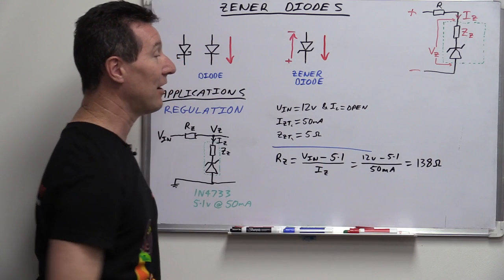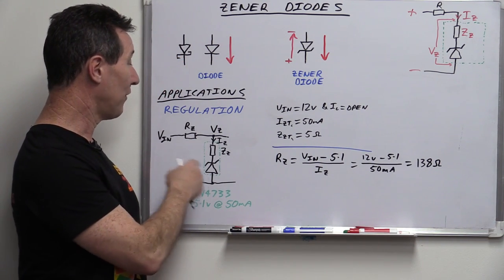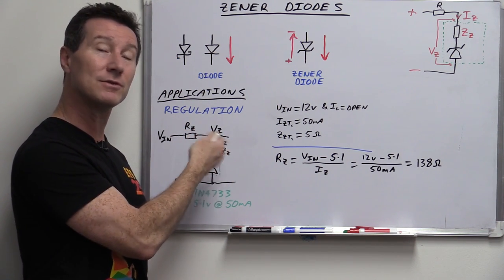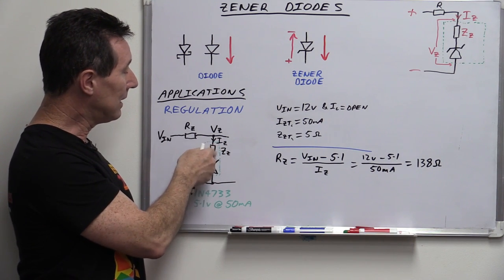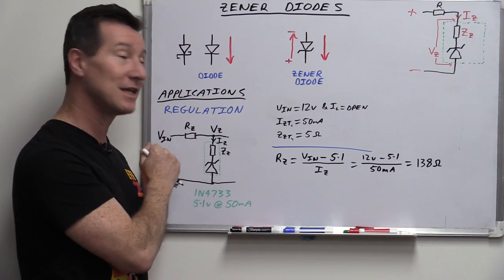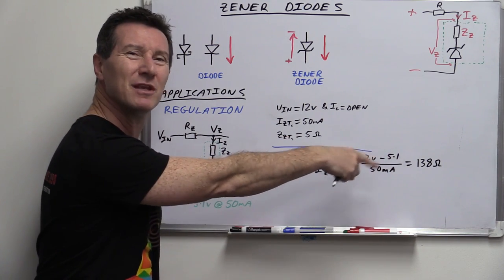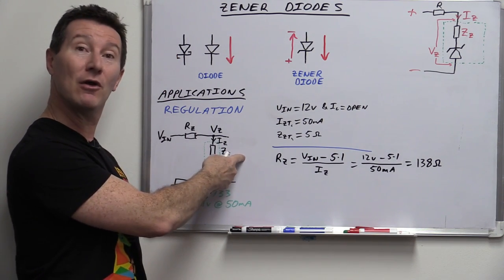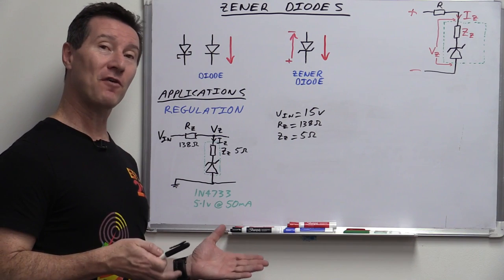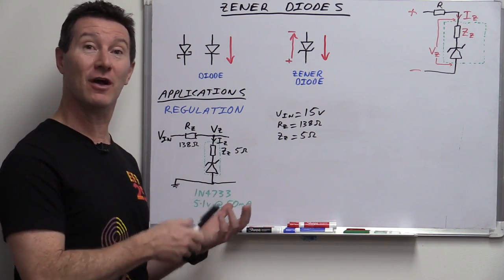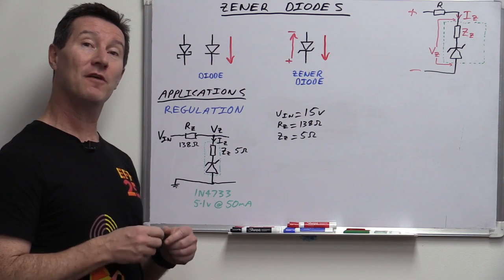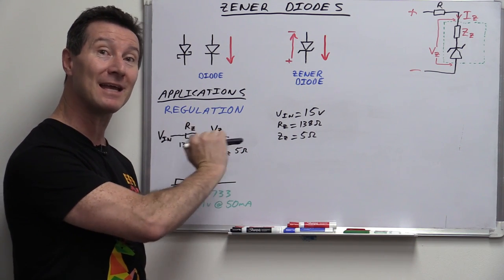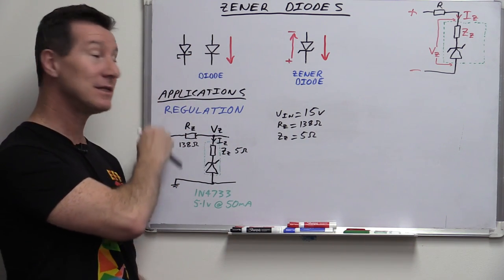And you can now see why the internal dynamic resistance of the Zener — 5 ohms — doesn't really matter compared to 138 ohms, especially with no load. That's all fine, and assuming your temperature doesn't change, the Zener diode would happily regulate at 5.1 volts. But the definition of regulation is keeping a fixed voltage when your input varies. So let's see what happens when the input voltage changes.